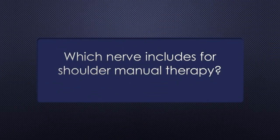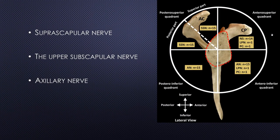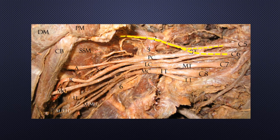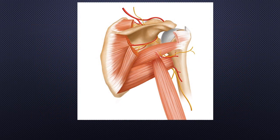Which level of cervical nerves is needed to anesthetize the upper extremity for shoulder manual therapy? I reviewed the articular branches of the shoulder joint in a previous video — please find and review. The suprascapular nerve arises from the upper trunk of the brachial plexus, formed by the union of ventral rami of the 5th and 6th cervical nerves, supplying the articular surface of the glenohumeral joint and posterior shoulder muscles.